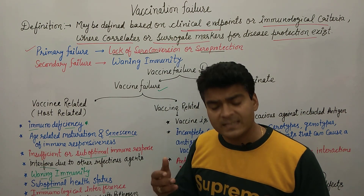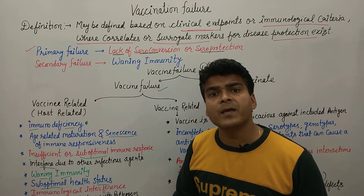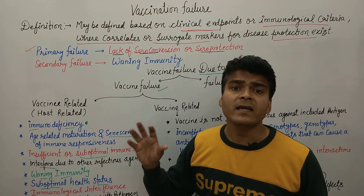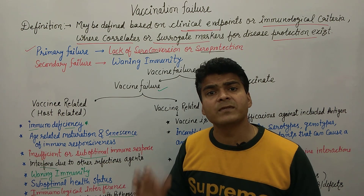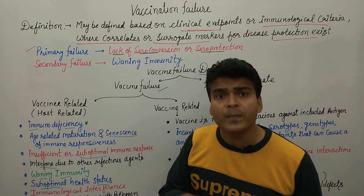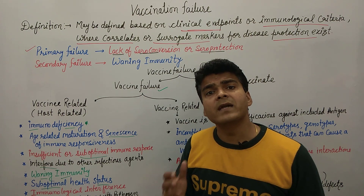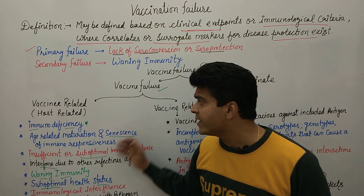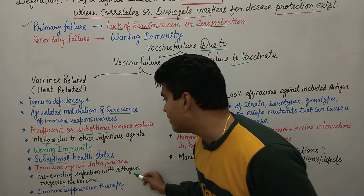Then immunological interference — what can happen is that if a person was given a vaccine and was also given another vaccine, immunological interference can occur. Two or three antibodies can be generated against different targets, and if any interference occurs between them — the possibility is low, but if it does occur — that is also a reason for vaccination failure.